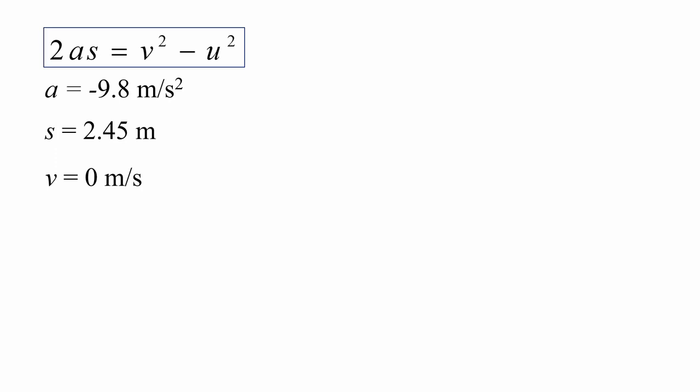Can you appreciate why there's a negative there? Because when we are jumping off the Earth's surface, the gravitational acceleration is in the opposite direction to our direction of motion. So to represent that, to compensate for that, we have a negative. We want our height to be 2.45 meters. So S is 2.45.